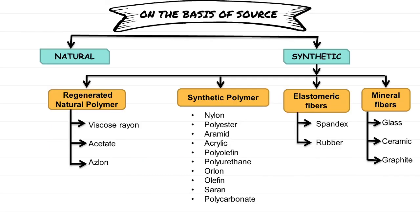On the basis of source, fibers are also classified as synthetic fibers. In synthetic fibers, there are regenerated natural polymers, which are cellulose fibers that are regenerated again. These include viscose rayon, acetate, and azlon. Then there are synthetic polymers: nylon, polyester, aramid, acrylic, polyphen, polyurethane, orlon, olefin, saran, and polycarbonate. Next are elastomeric fibers, which are highly elastic fibers that we can stretch and they return to their original shape — spandex and rubber fall into this category.